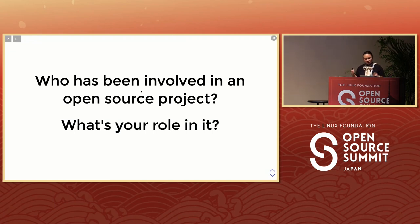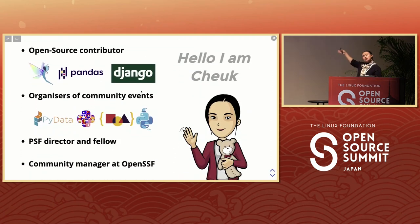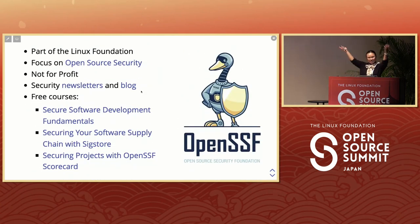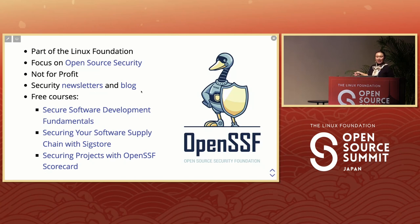We're all kind of involved in an open source project, so that's why we all care about open source governance. I also care about open source — I've contributed in the past and still contribute in other forms. I'm a director and fellow of the Python Software Foundation, and right now I work at OpenSSF as Community Manager. OpenSSF is part of the Linux Foundation; yesterday we had our OpenSSF Day sharing insights about open source security. We have newsletters, blogs, and free courses — if you're a developer who cares about security, check them out.